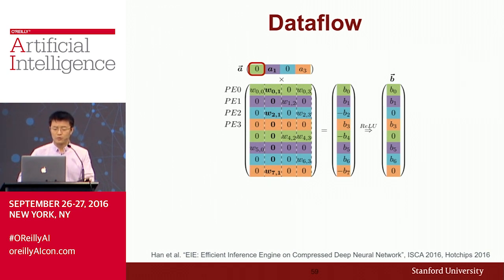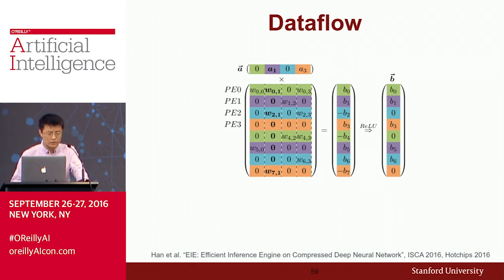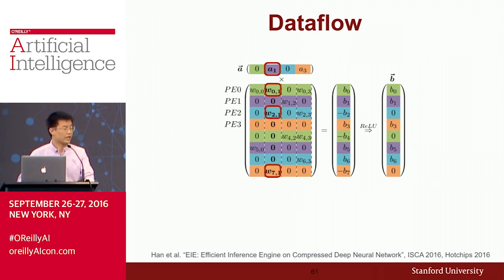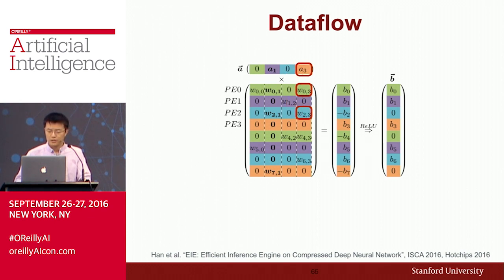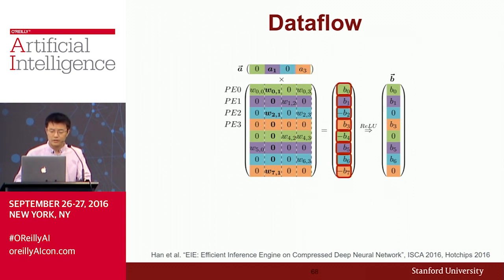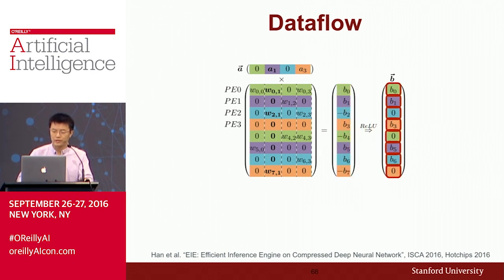In the dataflow, we pick only the non-zero elements in the input activation vector and ignore zero input activations. When we encounter a non-zero input activation, we broadcast it to all PEs, then do multiplication and update the output activation. We continue ignoring zero activations, broadcast non-zero ones, do multiply-and-add, and when all output activations are done, we write back.